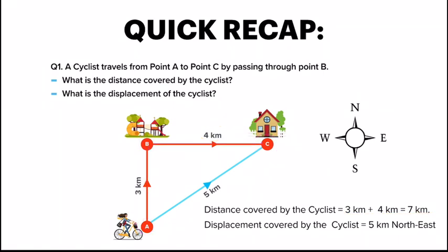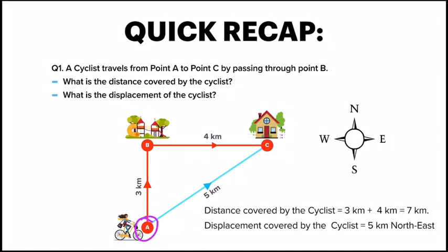Coming to the second point: what does displacement mean? Displacement means how much is the change of position from starting point to the ending point. The cyclist starts at point A and ends at point C. The gap between A and C is 5 km, and the direction is northeast. So the final answer is: the displacement covered by the cyclist is 5 km northeast. Since displacement is a vector quantity, we write it as a magnitude — 5 km — and a direction — northeast.